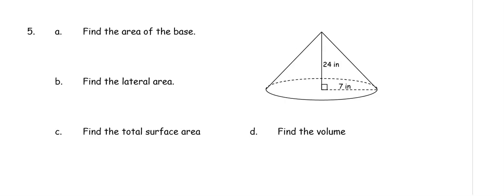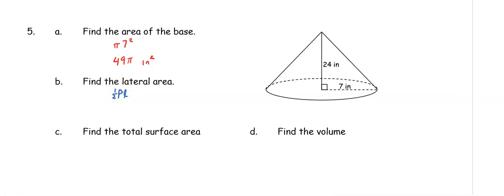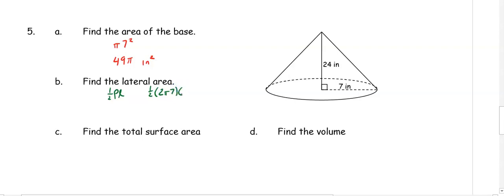In number five, find the area of the base, the lateral area, the total surface area, and the volume. The area of the base, because it's a circle, is pi r squared — so pi times seven squared gets us 49 pi inches squared. Your lateral area is one half perimeter times slant height; remember in a circle your perimeter is the same as the circumference, so we have one half times two pi times seven.